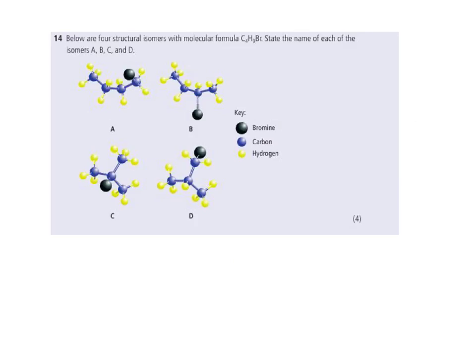And number 14, below are four structural isomers. They all have the molecular formulas C4H9Br. State the name of each of the isomers for A, B, C, and D. So A, when I look at it, I've got my bromine is the black one there. So I've got one bromo, and then I count, and I've got four carbons. So this would be butane. So A would just be 1-bromobutane.